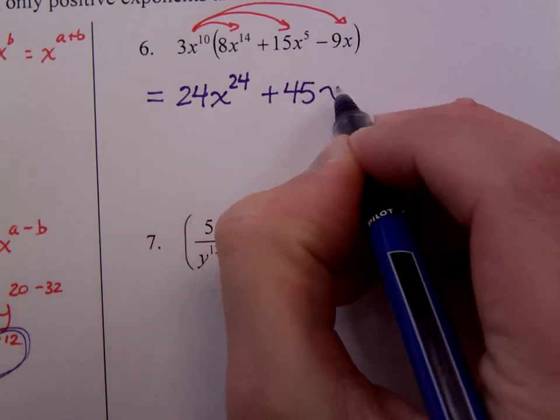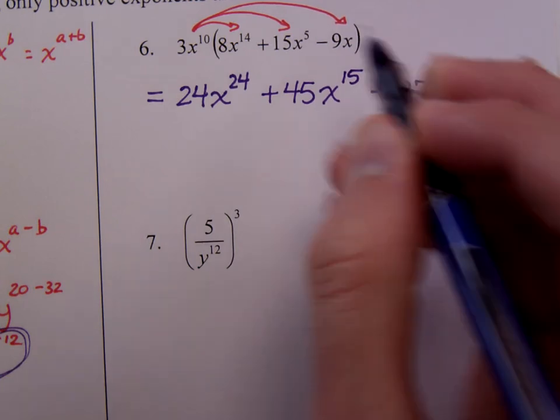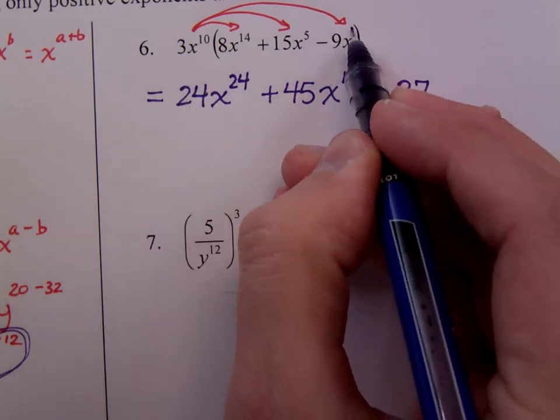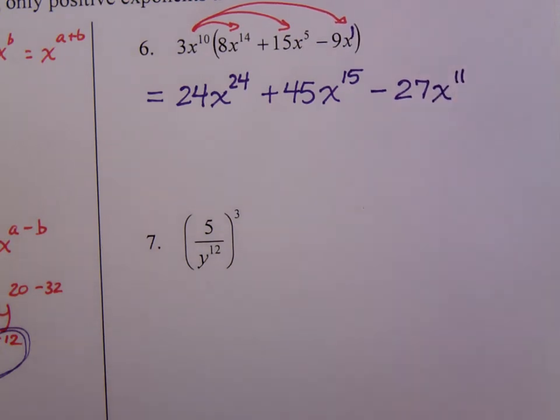3 times 15 is 45. Add the powers and you get x to the 15th. 3 times negative 9 is negative 27. You have 10 factors of x. You have one more factor of x, so that is x to the 11th.